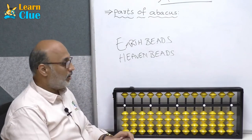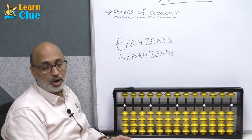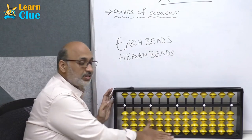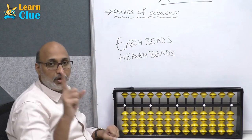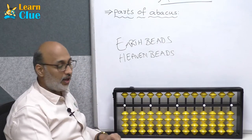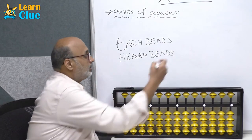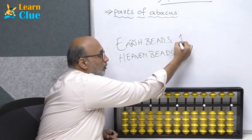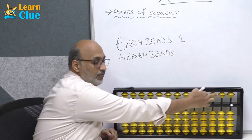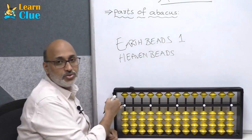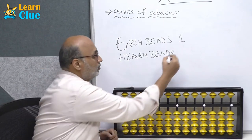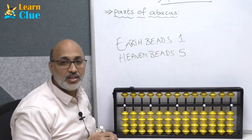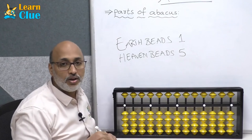Now we will see the value of the beads. All the earth beads carry a value of 1. All the heaven beads carry a value of 5.